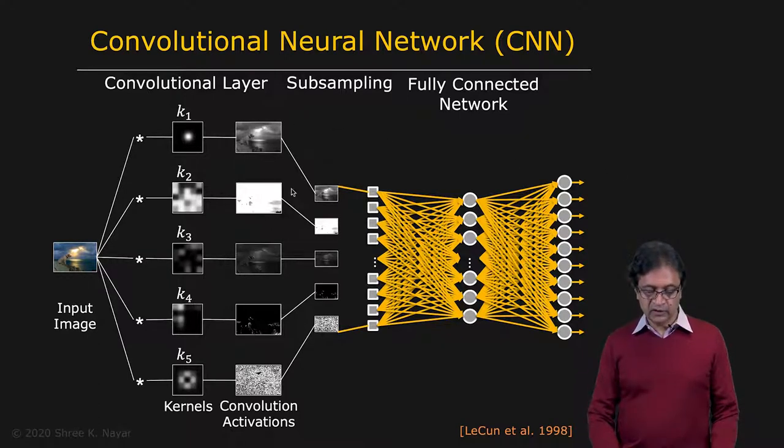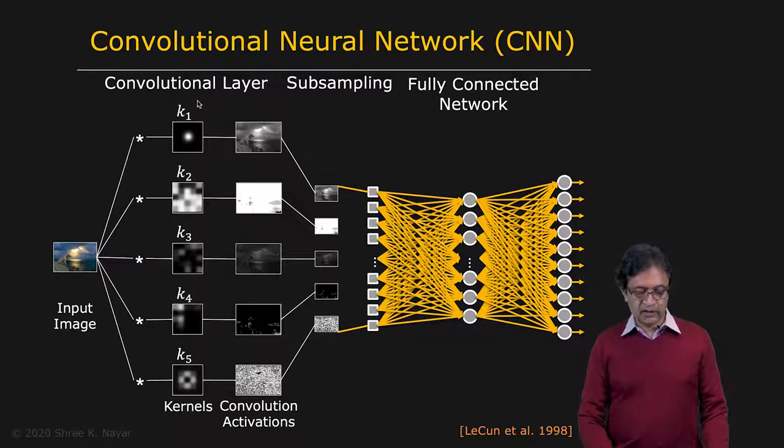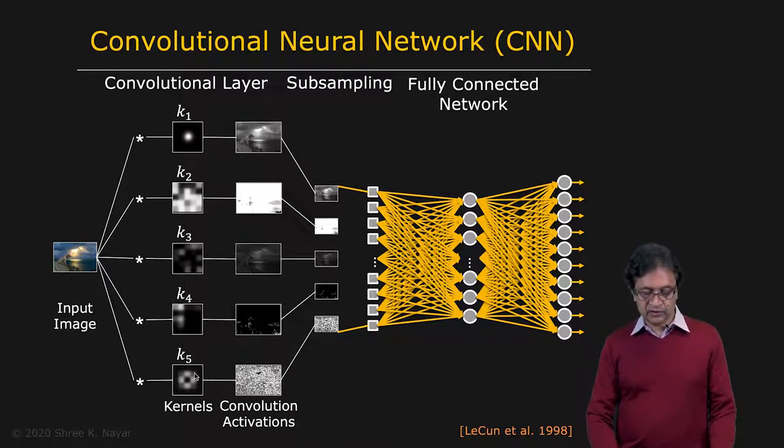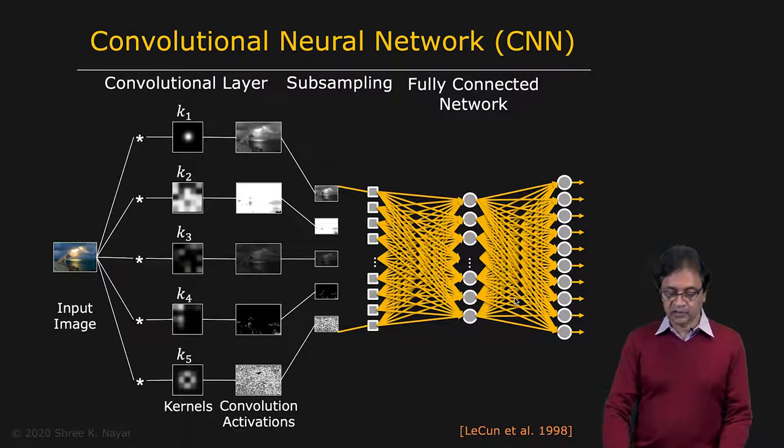So here you see that you have an input image and this image is being convolved with all of these kernels K1 through K5. When you convolve an image with something, you end up getting an image. So these are your activations now. So very large activations, each one the size of an image. And you have certain other processes happening after that and then you have your full network with weights and biases.